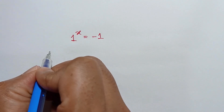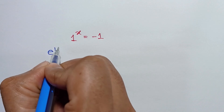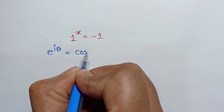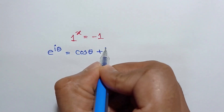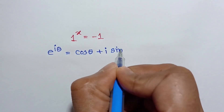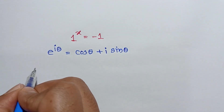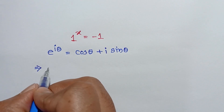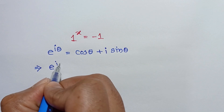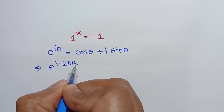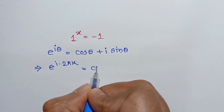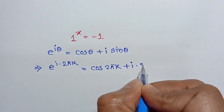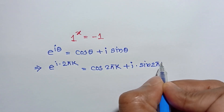From Euler's theorem we know e to the power i theta is equal to cos theta plus i sine theta. Substituting theta is equal to 2 pi k, we will get e to the power i times 2 pi k is equal to cos 2 pi k plus i sine 2 pi k.